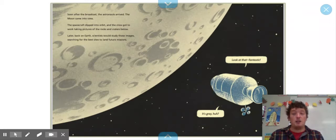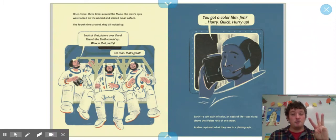Later, back on Earth, scientists would study those images, searching for the best sites to land future missions. Once, twice, three times around the moon, the crew's eyes were locked on the pocketed and scarred lunar surface. The fourth time around, they all looked up.